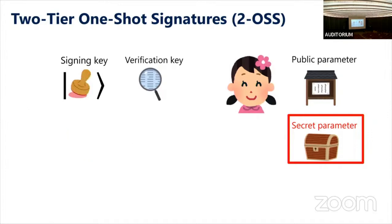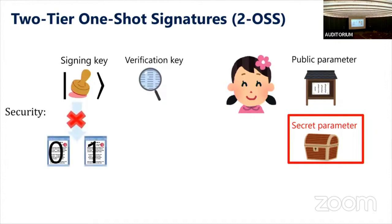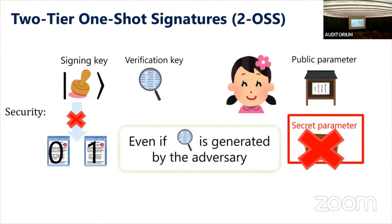As security for 2OFS, we require that one cannot generate signatures on both zero and one simultaneously. A signing key can produce either a signature on zero or on one, but not both at the same time. More precisely, this holds when the secret parameter is not given to the adversary, even if the verification key was generated by the adversary.